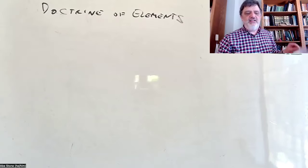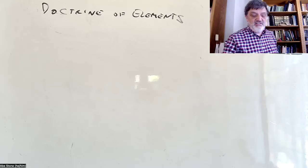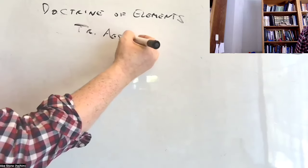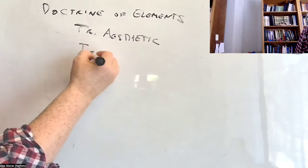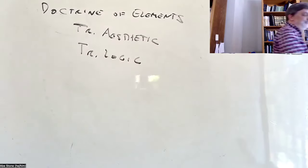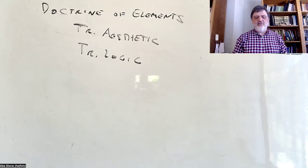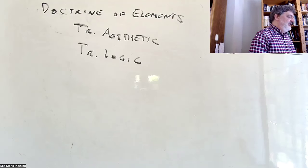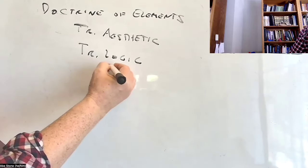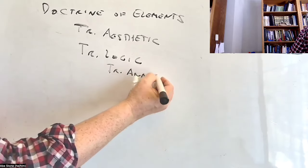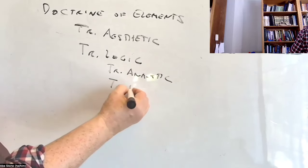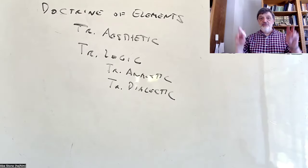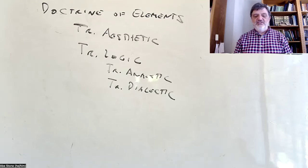I'm not going to keep writing 'Doctrine of Elements' up every time because we're always going to be in the Doctrine of Elements. The Doctrine of Elements is divided into two parts: the Transcendental Aesthetic and the Transcendental Logic. The Transcendental Logic is divided into two parts: the Transcendental Analytic — the logic of truth — and the Transcendental Dialectic — the logic of illusion.